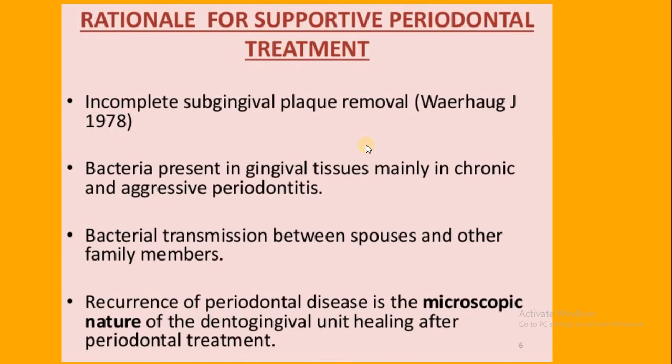The second cause is that bacteria present in the gingival tissue, mainly in both chronic and aggressive periodontitis. Eradication of intra-gingival microorganisms may be necessary for stable periodontal results. Scaling, root planing, and even flap surgery may not eliminate intra-gingival bacteria in some areas, and these bacteria may recolonize the pocket and cause recurrent disease.